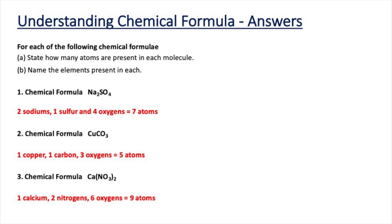In question one we have the chemical formula Na2SO4. There are two sodiums because it's Na2, one sulfur, and four oxygens — a total of seven atoms altogether. In question two, the formula was CuCO3: one copper, one carbon, and three oxygens — a total of five atoms. Note it is carbon and oxygen, not cobalt, because there is a capital C and a capital O in this formula.